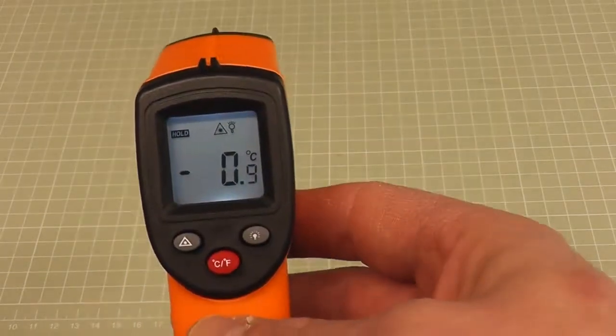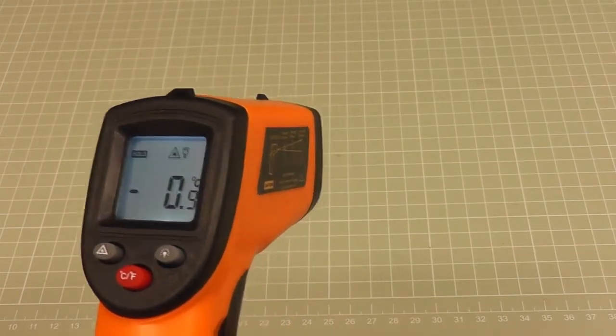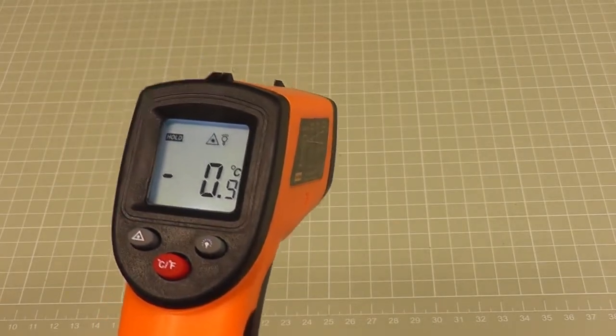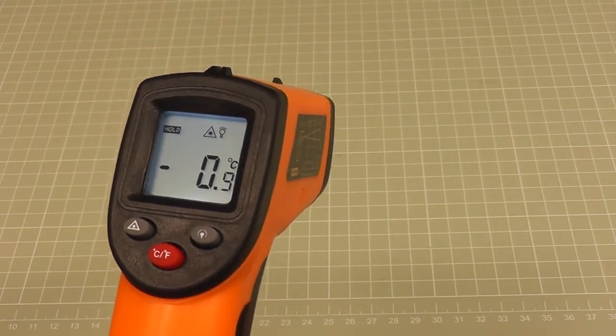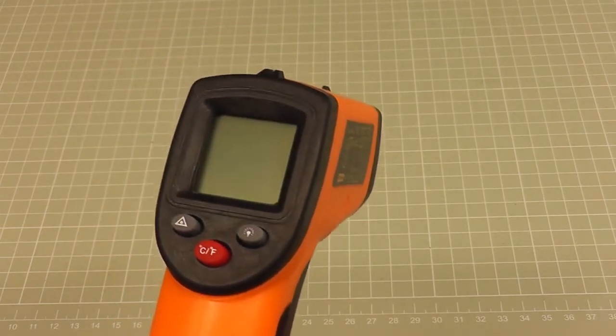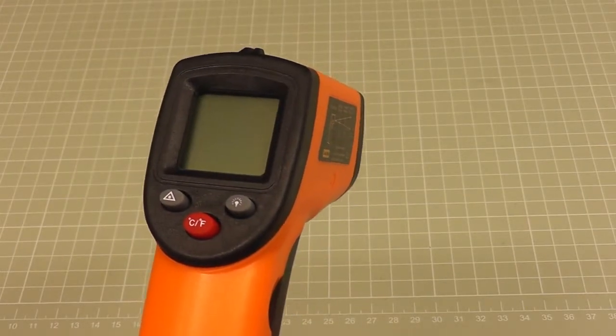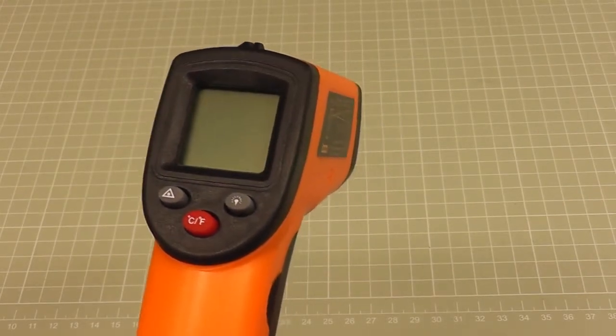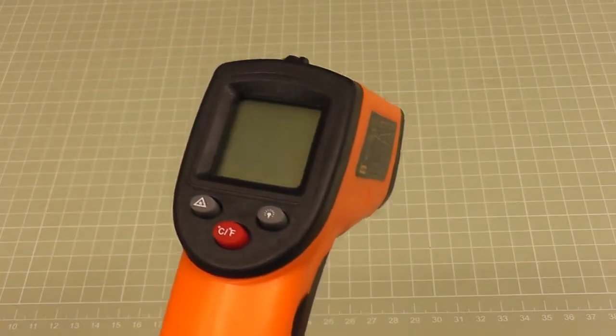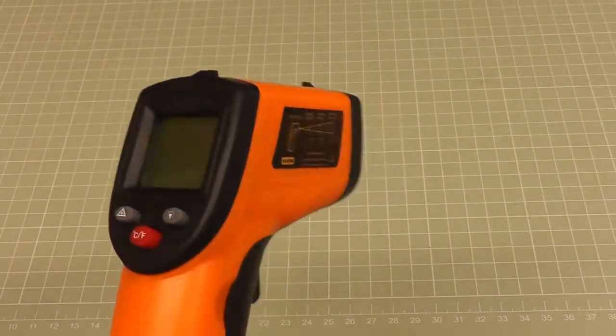But one thing where this would come in handy is when I did the brakes on the MR2. One of them was dragging, which was a bit hard to tell until I dismantled that particular wheel, which was the rear passenger. But you could feel the wheel was warm, and this would give me an indication by taking a temperature reading off the discs or the wheel. If one was reading significantly higher than the others, then I know I'd have a dragging brake problem.